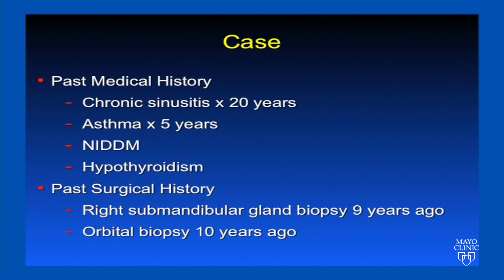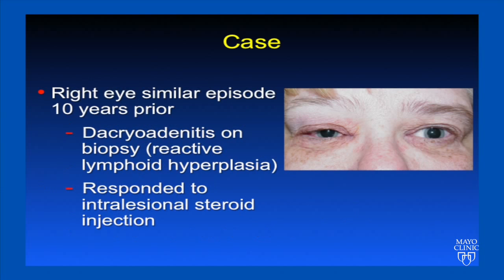Her past surgical history was significant for a right submandibular gland biopsy nine years previously and an orbital biopsy ten years previously. This had been her appearance at the time of the previous right orbital involvement ten years prior. At that time, she underwent right lacrimal gland biopsy, which revealed dacryoadenitis with a reactive lymphoid hyperplasia, and this responded to intralesional steroid injection until her most recent presentation.